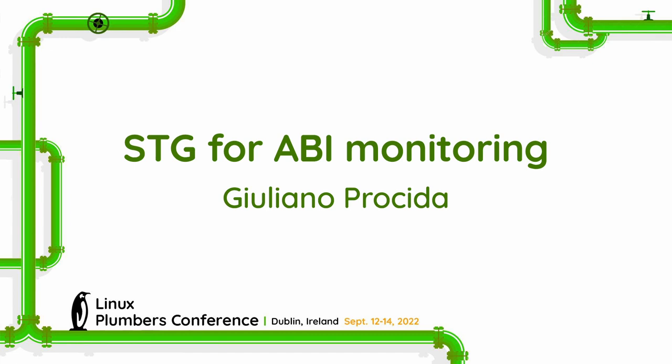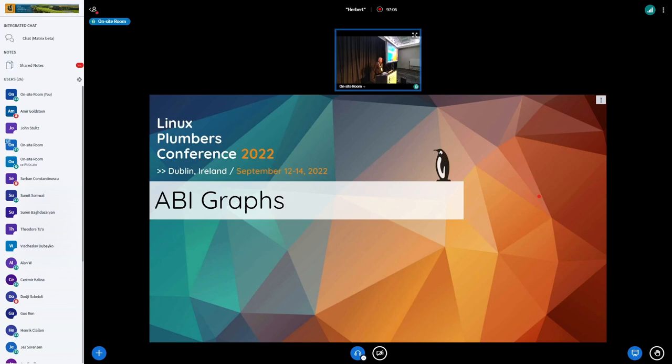Hello, I'm Juliano. I work in the Android systems team, actually for Matthias, and we're developing STG, which is an ABI tooling project as part of AOSP. I'm going to talk about some of the ideas of STG, and I'm looking for feedback as to whether people think these are good ideas, and also to hear what people really want from their ABI monitoring.